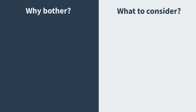Now that we know what dependency injection is, let's check out why to bother implementing this pattern and what are the challenges to consider when doing so. Dependency injection helps us test our code because it ensures that the classes we build can be instantiated independently. Even more, it allows us to switch out the dependency during testing. For example, we may not want our mailer class to send out real production emails while running unit tests, so we might switch out the implementation with a simple service that will just fake the email delivery.